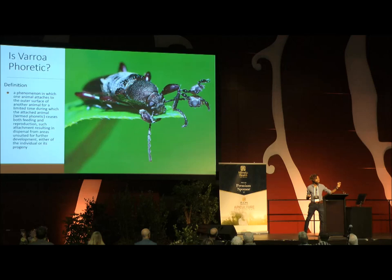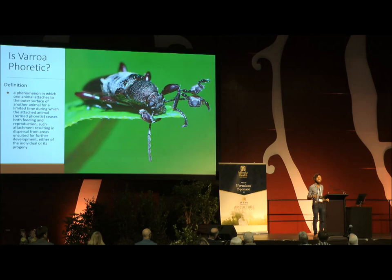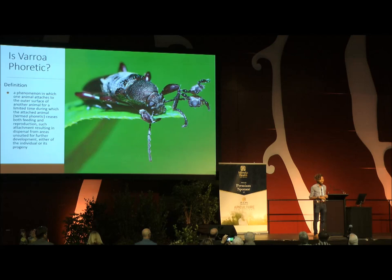The word phoretic is related to creatures who use their host as a vehicle and only as a vehicle. They attach to this creature and use it to move them from point A to point B. But they value that organism so much as a vehicle that they refuse outright to feed on that creature. And we have been saying for decades that Varroa destructor is phoretic, meaning that during the stage of its life cycle when it is on adult bees, it suspends its feeding.